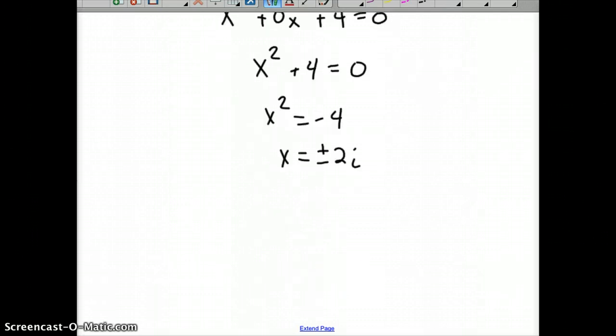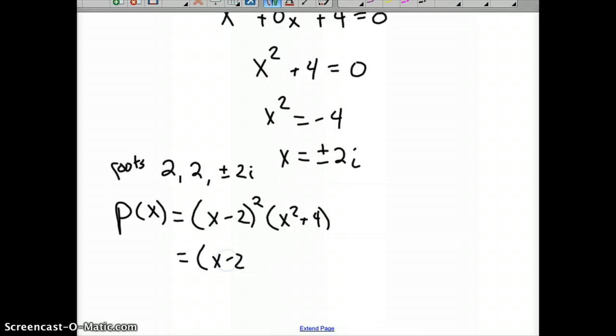So the roots or zeros of this equation are 2, 2, and plus or minus 2i. You could write this polynomial in factored form as p of x equals x minus 2 squared times x squared plus 4, or better yet, x minus 2 squared times x minus 2i times x plus 2i.